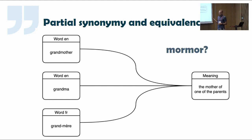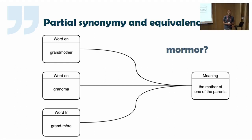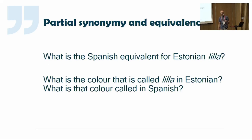If we have this picture where we have full equivalents for English and French terms for the mother of one of the parents, where do we put 'mormor'? For approximate equivalents, one way — asked in lexicographic tradition for millennia — is: what is the Spanish equivalent for Estonian 'lilla'? But we would prefer asking two separate questions: what is the color denoted by Estonian 'lilla', and how is that color called in Spanish? We want to pay attention to what these words refer to, not just find equivalents at the language level.